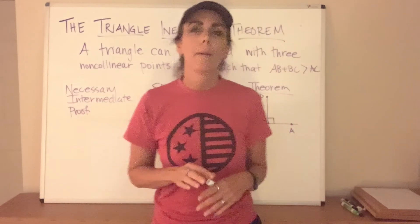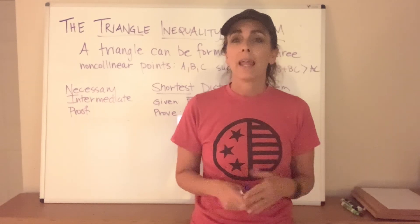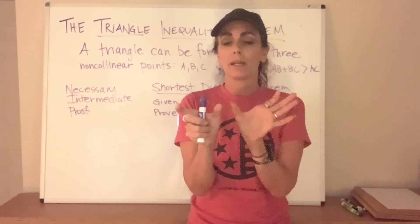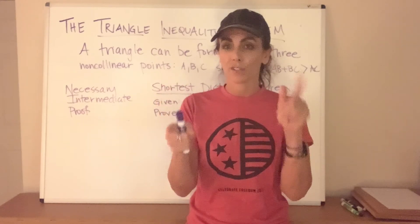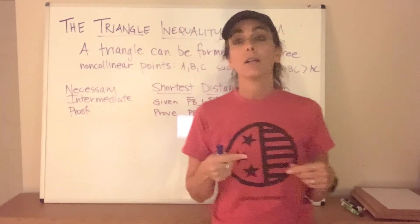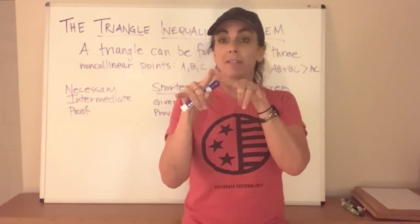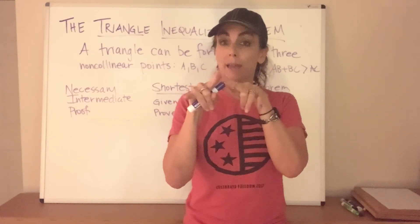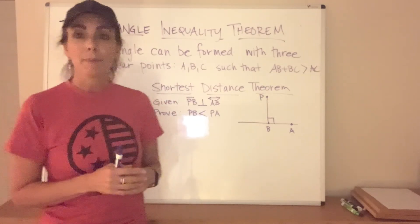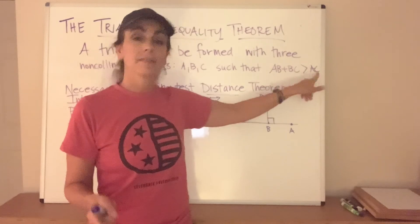The Triangle Inequality Theorem — if you have three points and they are collinear, then the distance between the first two plus the distance between the second and third would equal the distance between the first and the third. If they're not collinear, they form a triangle, and that triangle has the relationship that the sum of any two side lengths must be greater than the third. A triangle can be formed with three non-collinear points A, B, and C such that the distance from A to B plus the distance from B to C will be greater than the distance from A to C.